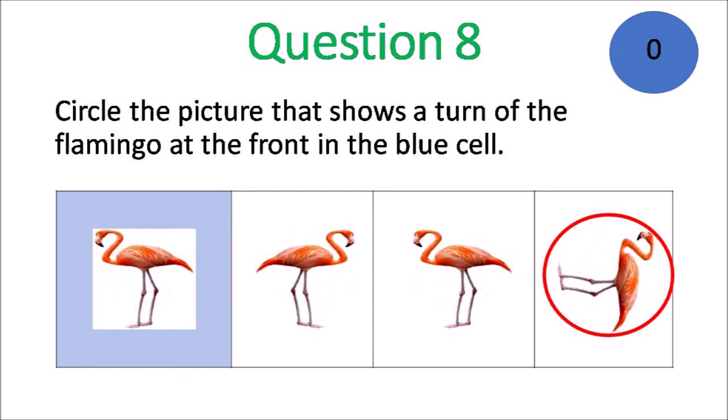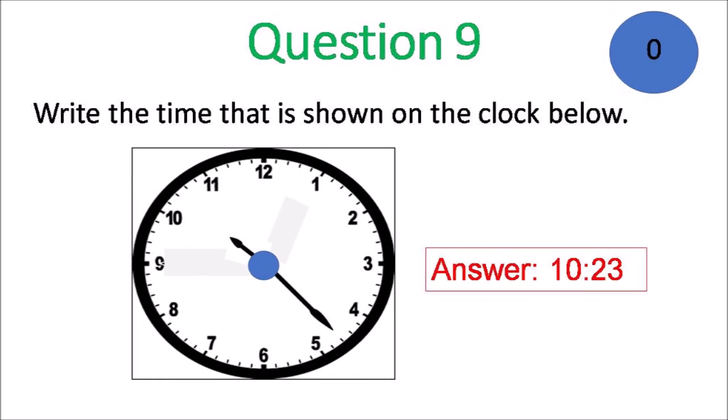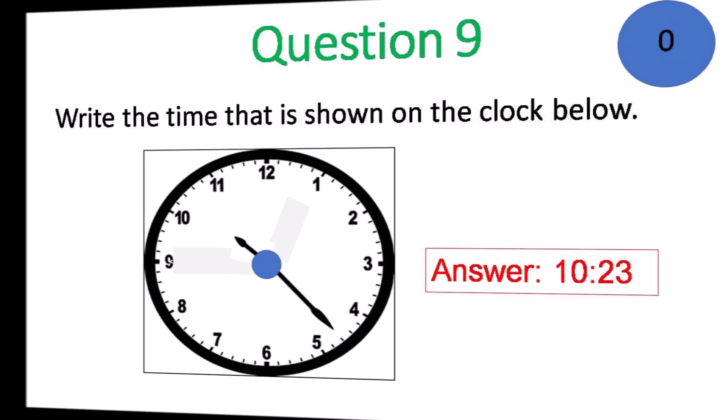The picture is the one at the box that shows the turn. The first one is a flip. The second one is a slide. Write the time shown. 10:23, 23 after 10.